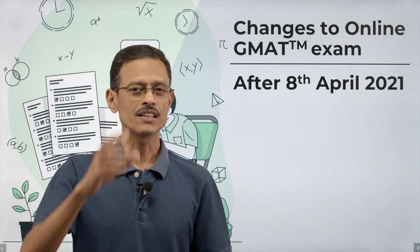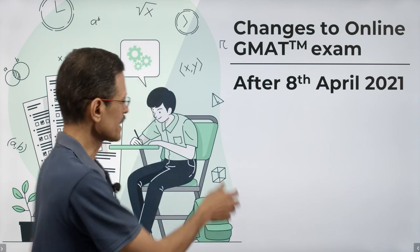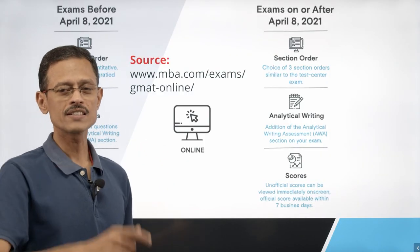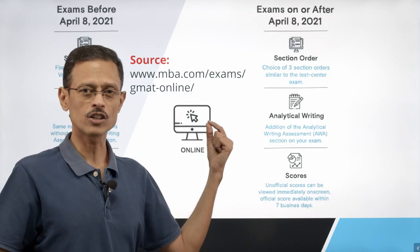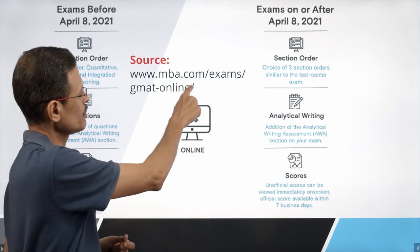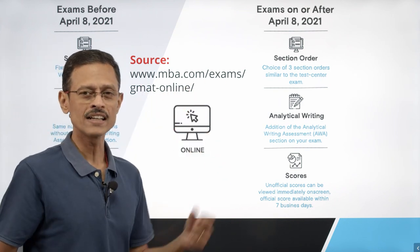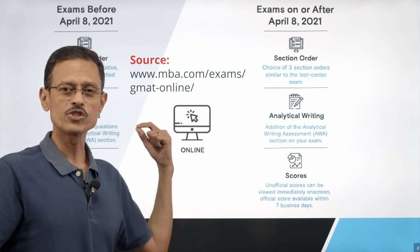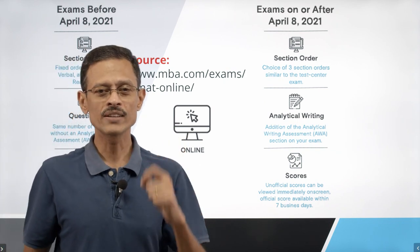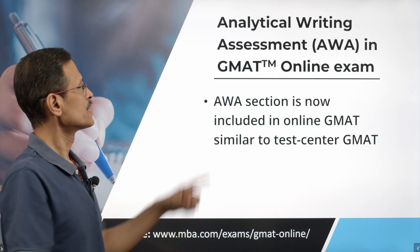Let's take a look at all 5 changes — all of those are welcome. Where do you find information about all of this? On the official mba.com site — the URL is mba.com/exams/GMAT-online. You can go and check it out on the official site too. Let's take a look at each one of these changes one at a time.